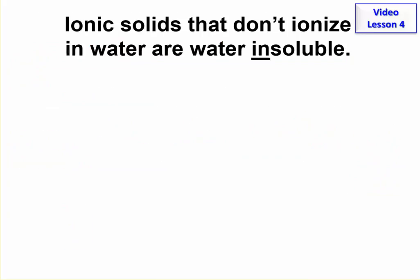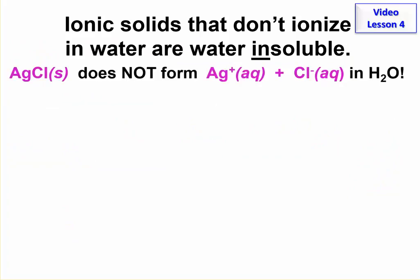Sometimes you have ionic compounds that don't ionize when you put them in water. And when that happens, they're not water soluble. For example, silver chloride, when you put it in water, it does not break apart. In fact, the opposite thing happens. If you put these two ions into water, and these would have to be added from some different compounds, if you had these floating around in water, they would find each other and form the solid.